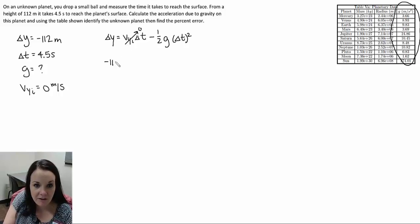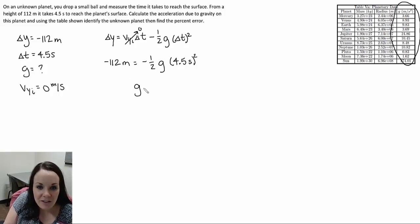We can start plugging in our values. Negative 12 meters is our delta y. We know that g is what we're trying to find, and our time is 4.5 seconds squared. Don't forget to square this. When we solve this, we get g equals 11.06 meters per second squared.